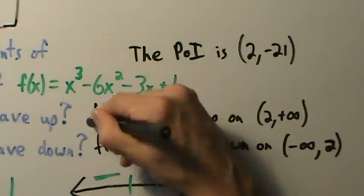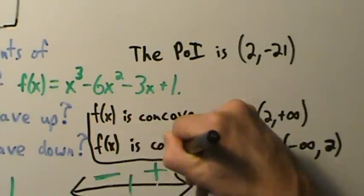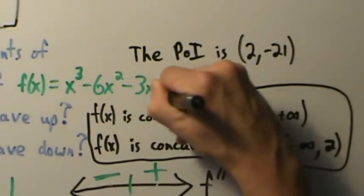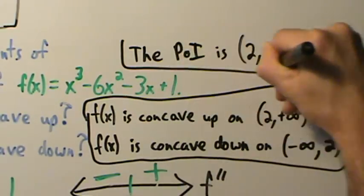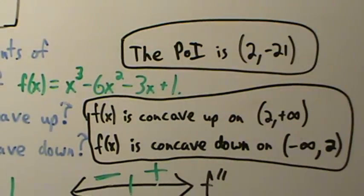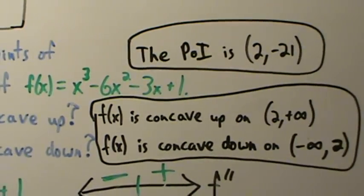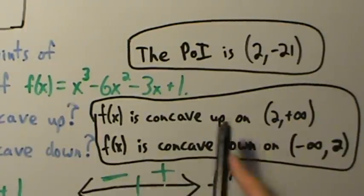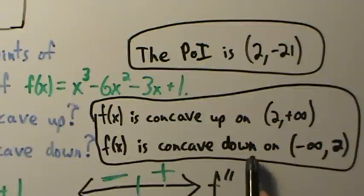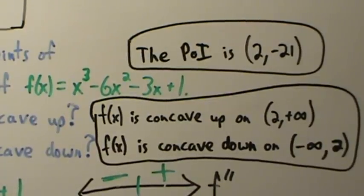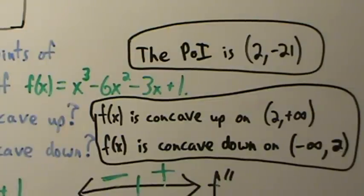So our final answers are: the point of inflection is (2, -21), f is concave up on (2, ∞), and f is concave down on (-∞, 2). That's example one with concavity and points of inflection.